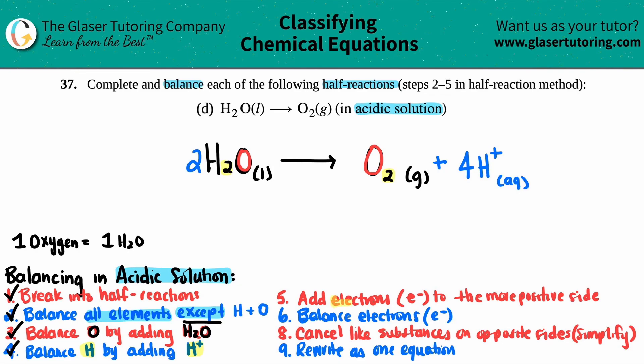Now I'm going to add electrons, which are E negative. Electrons are negative, to the more positive side. Now this is pretty cool. Whenever you get to the electron stage, what I like to do is I just like to make a barrier between the reactants and the product side. Just makes it easier. So I just put a little break here.